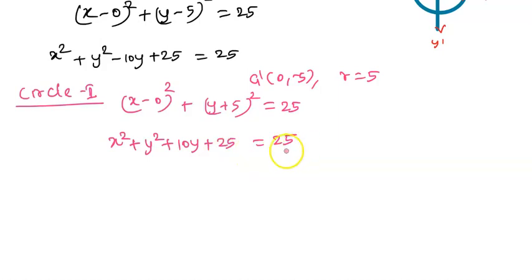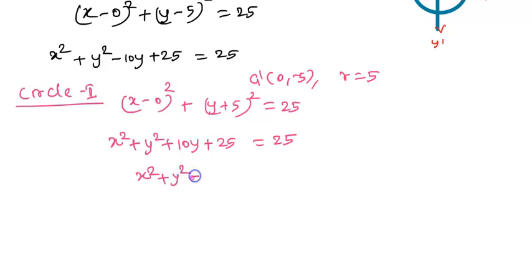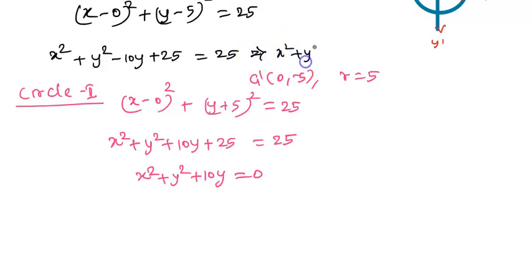Now we simplify both equations. The first equation for Circle 1 is: x squared plus y squared minus 10y — where 25 minus 25 equals 0 — so x squared plus y squared minus 10y equals 0. The second equation for Circle 2 is: x squared plus y squared plus 10y equals 0.